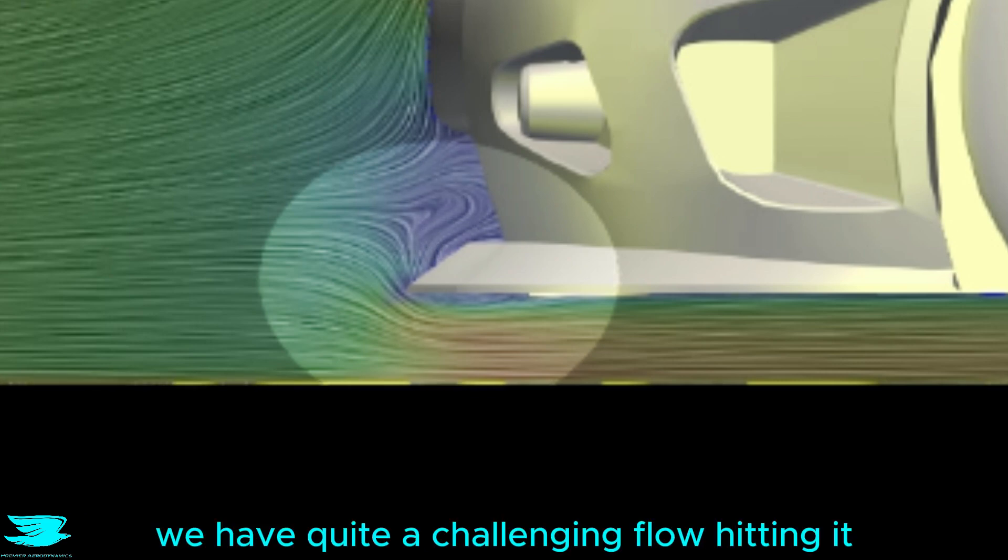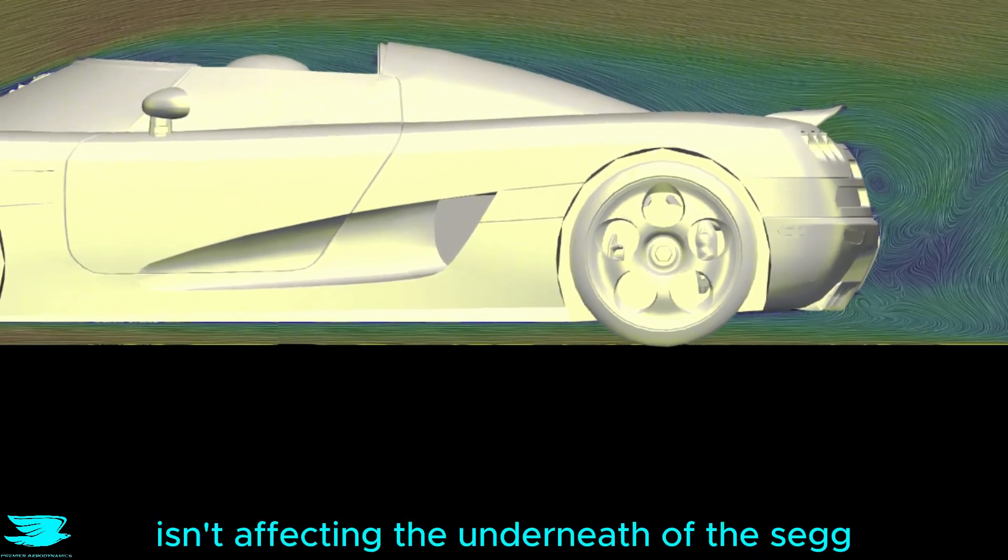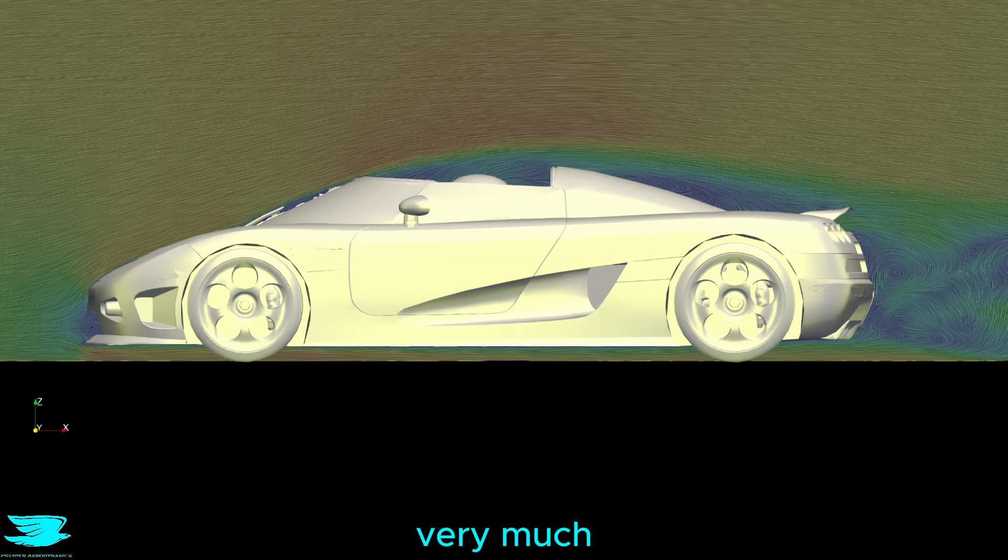We have quite a challenging flow hitting it because it is so angled, but the splitter handles it like a champ. And the underbody is performing very similarly to last week's roofed seg, so we can kind of conclude that the convertible version isn't affecting the underneath of the seg very much.